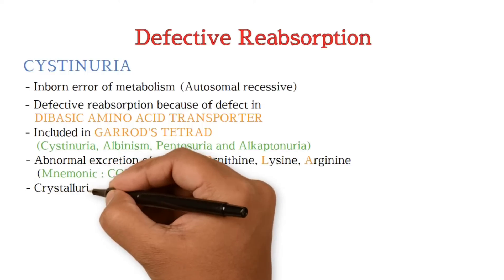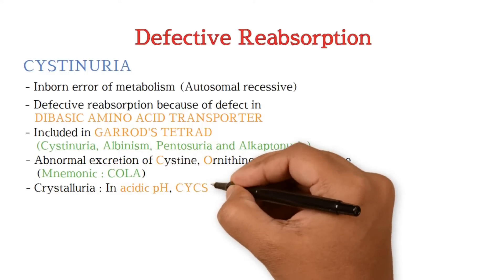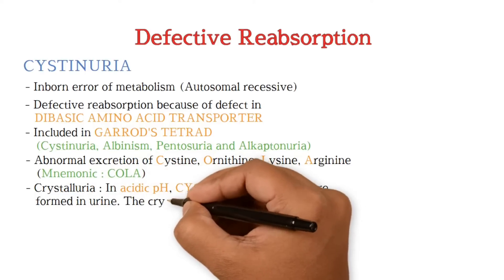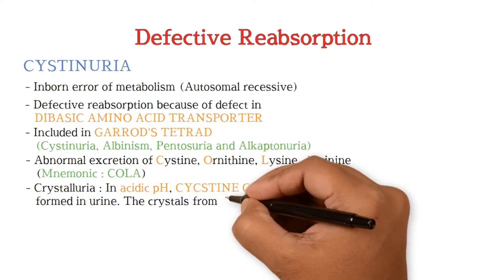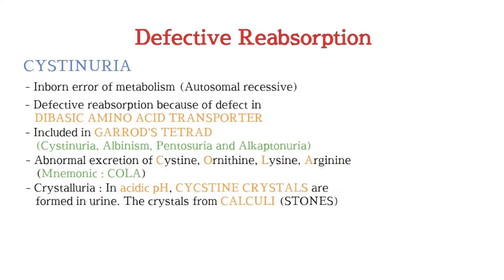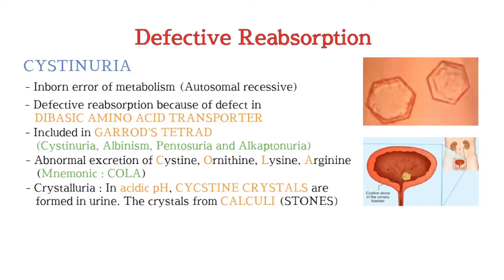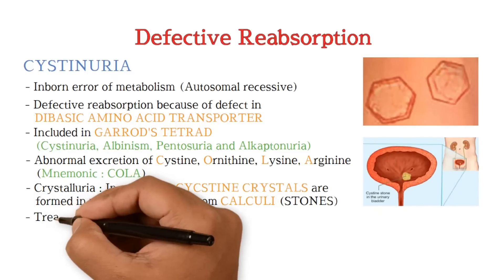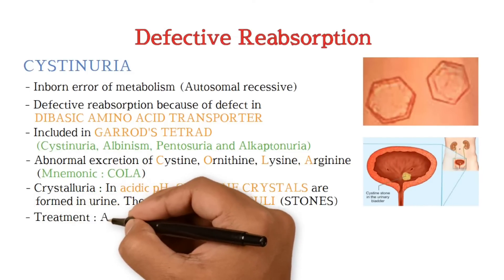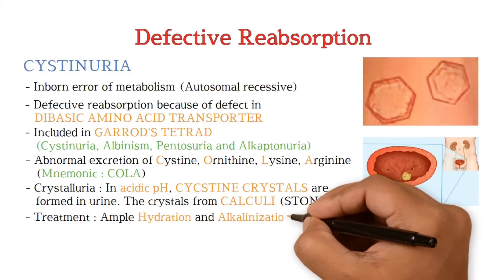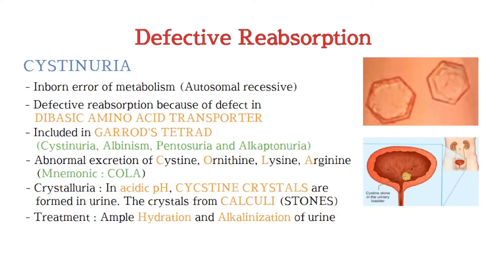Cystinuria is the condition in which cystine crystals form in the urine at acidic pH. Ample hydration and urine alkalinization are part of the treatment.